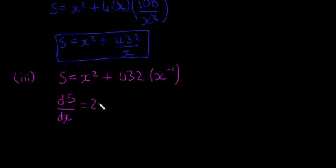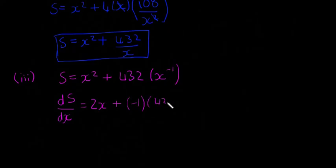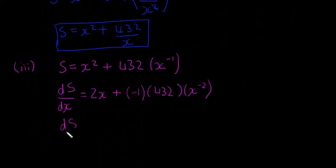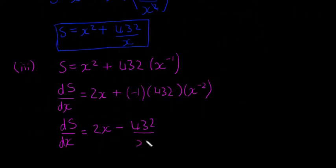So dS/dx equals 2x plus, bringing the −1 power down to the front: minus 1 times 432, with x to the power of −2. Therefore dS/dx = 2x − 432/x².